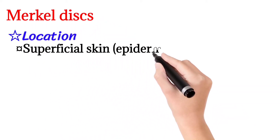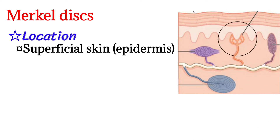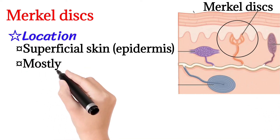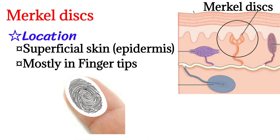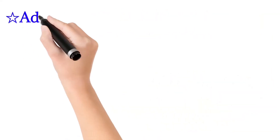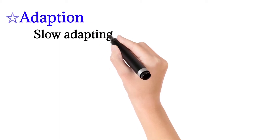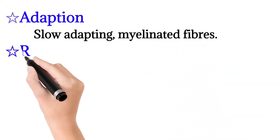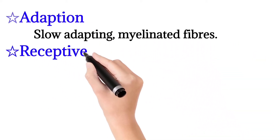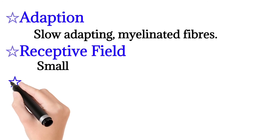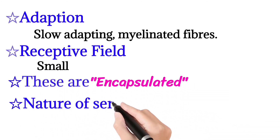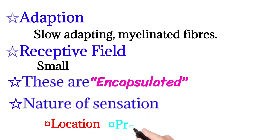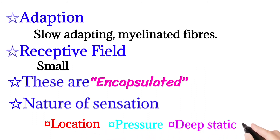Then we will talk about Merkel disc. It may be present in the superficial layer or superficial skin, which is the epidermis, and it is mostly in fingertips. It is slowly adapting and has myelinated fibers. Its receptive field is small, and these are encapsulated. The nature of sensation is pressure, deep static touch, with shape and edge detection.